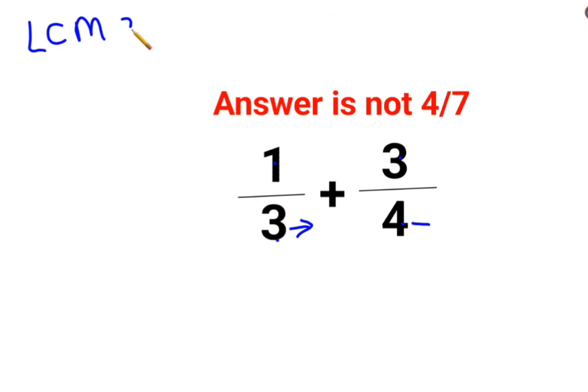You need to take the LCM of 3 and 4. Since 3 is prime, the LCM will be 3 multiplied by 4, which is 12. You need to convert the denominators in terms of 12.